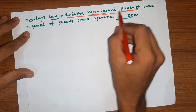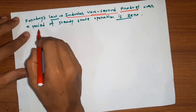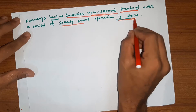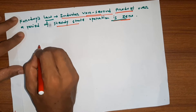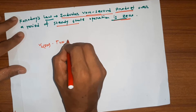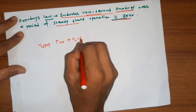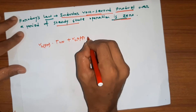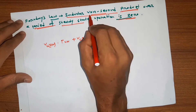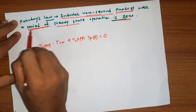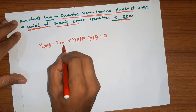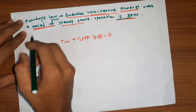Faraday's law states that the inductor volt-second product over a period of steady-state operation is equal to zero. This means the volt-second product is equal to zero. So VL_on times T_on plus VL_off times T_off equals zero. This is called volt-second balance.